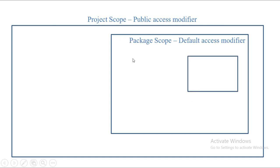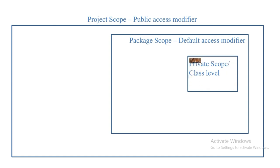The next scope is the private or class-level scope. If a variable is defined as private, then 'mouse' is available only within that class — not even to classes present in the same package. So private modifiers restrict access to just the class; it is not accessible in the package or anywhere else in the project.